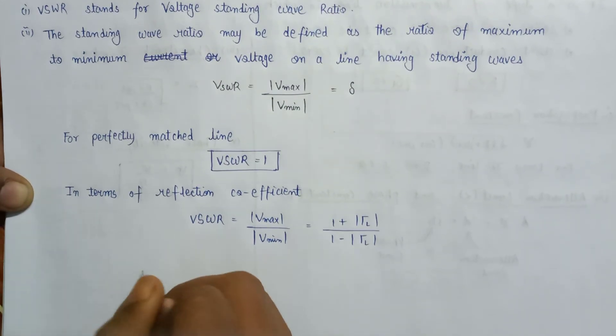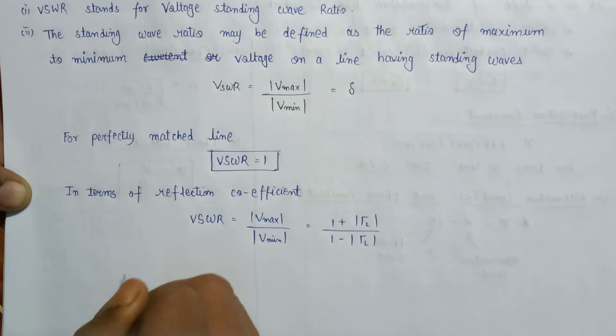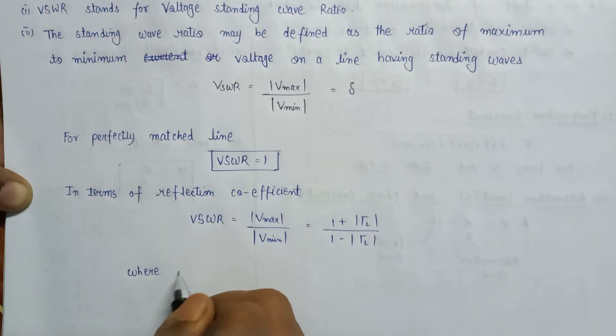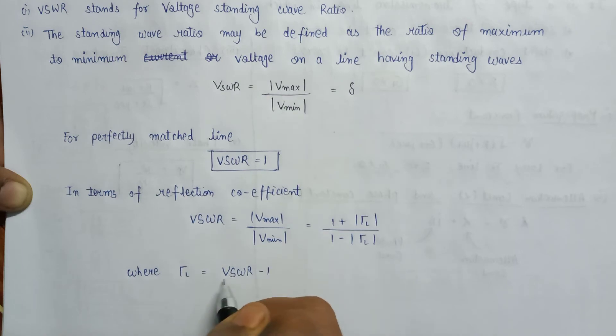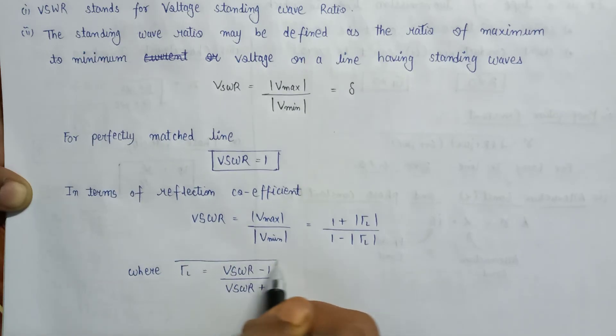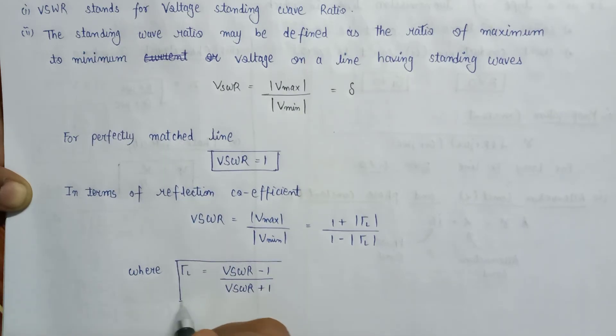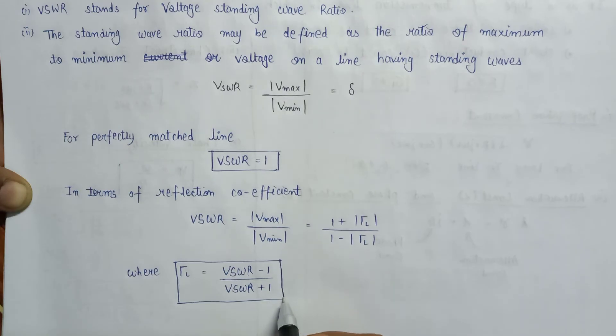And here the reflection coefficient can also be denoted in terms of VSWR. That will be equals to VSWR minus one over VSWR plus one. So this is the formula for the reflection coefficient in terms of VSWR.